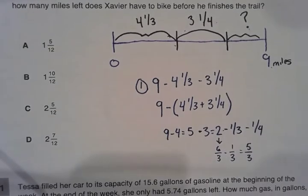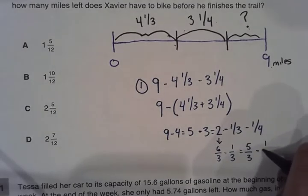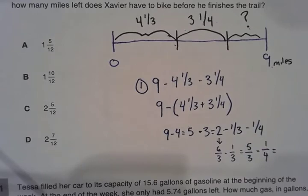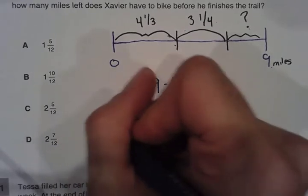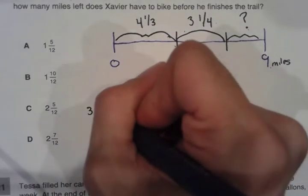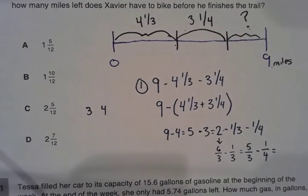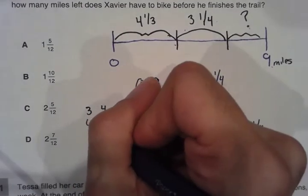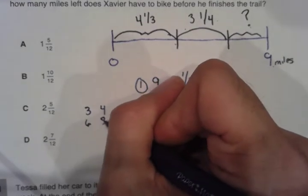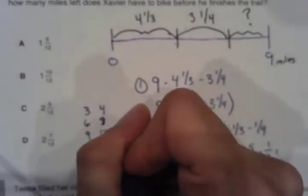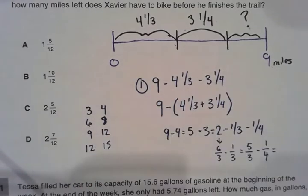Now we're going to be doing five-thirds minus one-fourth. So what is our common denominator for three and four? Sometimes I just like writing out the numbers and writing out their multiples until I see a similar number. So three, four, six, eight, nine, twelve, twelve, fifteen. I see twelve twice, so my common denominator is going to be twelve.